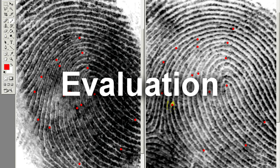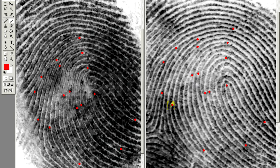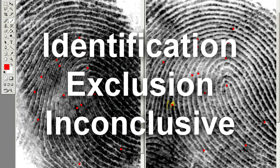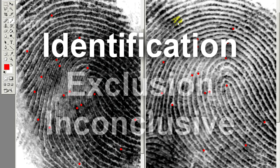The third phase in the comparison process is the evaluation phase. We look at the similarities and any differences that we found during the comparison phase, and come to a conclusion of identification, exclusion, or inconclusive. For this example, there are enough clear features that share the same orientation and unit relationship in both prints to come to the conclusion of identification that these two prints were made by the same finger.